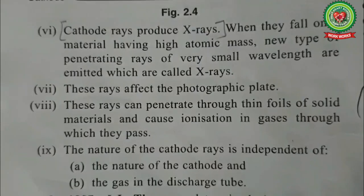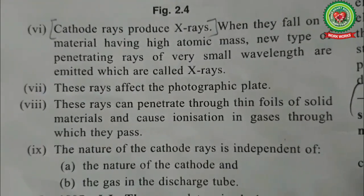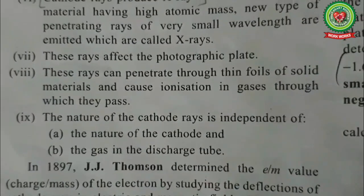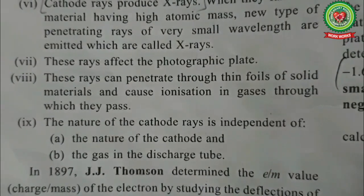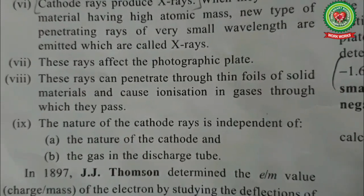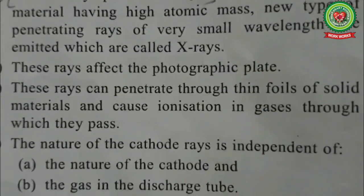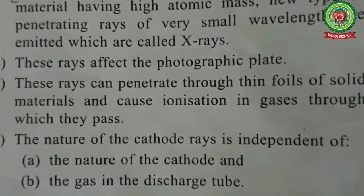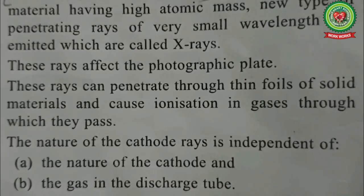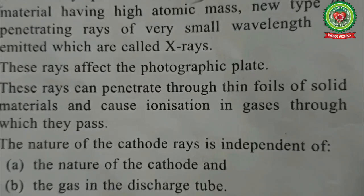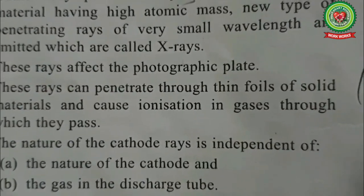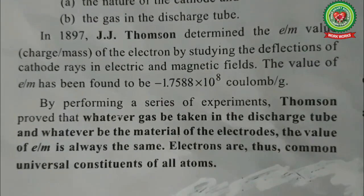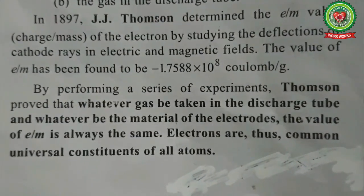Cathode rays also produce X-rays when they fall on heavy atoms, emitting small wavelengths. The rays are affected by photographic plates, can penetrate thin foils of solid materials, and cause ionization in gases — ionization being the removal of an electron from the gas. The nature of cathode rays is independent of the nature of the cathode or whatever gas is taken in the discharge tube.